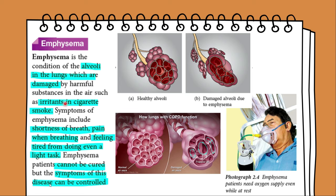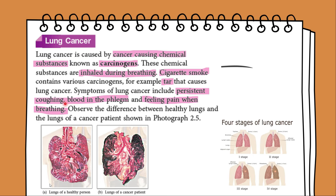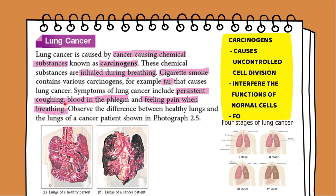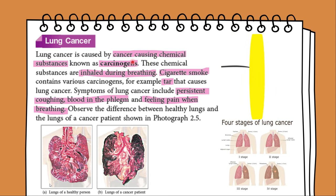There is no cure for emphysema, but the symptoms of this disease can be controlled. Lung cancer is a disease caused by a change in the cells inside the lungs that divide out of control and produce lumps of cells known as tumors, which interfere with the normal functions of the lungs. This disease occurs due to chemicals in cigarette smoke, such as tar, which contains cancer-causing substances known as carcinogens. Symptoms of lung cancer include persistent coughing, blood in the phlegm and feeling pain when breathing. Lung cancer may not have any symptoms at first, and when it is detected, the cancer cells may have already spread from the lungs to other organs.